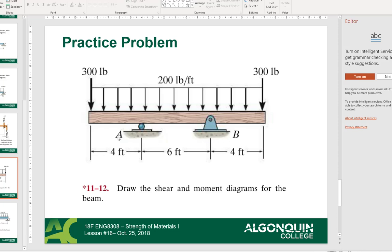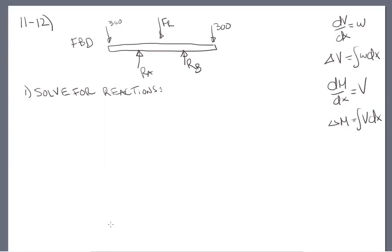We're going to solve for reactions. Remember the relationships that are really important in solving these problems. We have dV/dx, the slope of the shear curve, is equal to the distributed load — negative 200 foot-pounds in this case. The change in V over distance equals the area under the distributed load curve, where W is the distributed load. The slope of the moment curve, dM/dx, is equal to the shear value, and the change in moment equals the area under the shear curve.